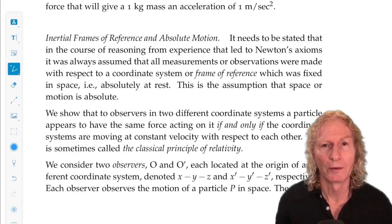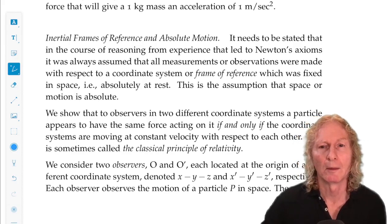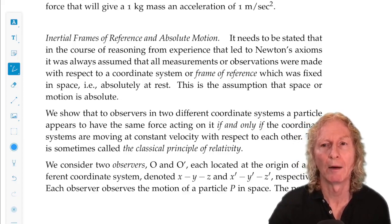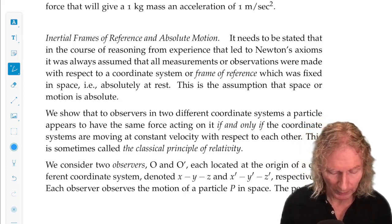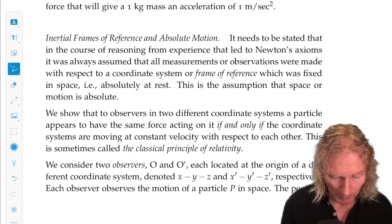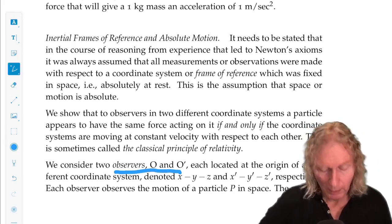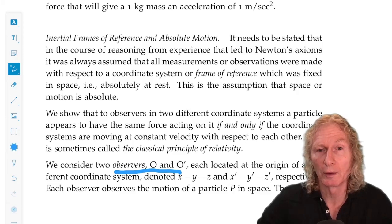Alright, inertial coordinate system. So here's the idea. Suppose you have two observers, O and O prime. So what does that mean? Well, it means that you have two different coordinate systems.